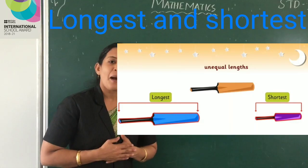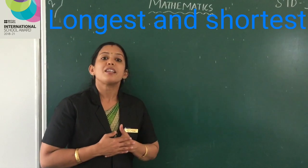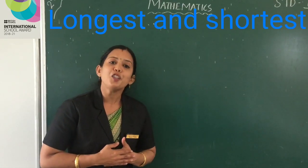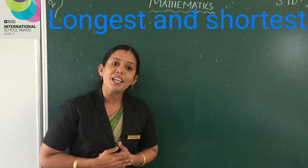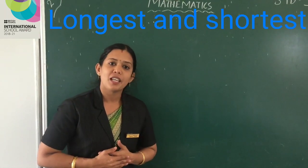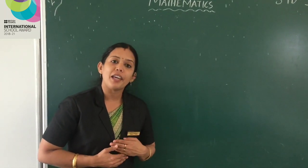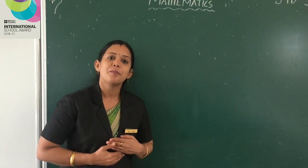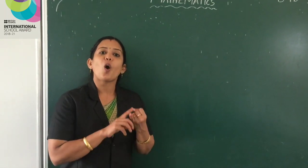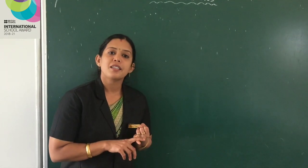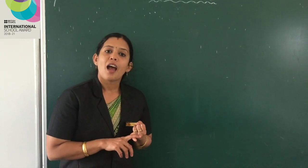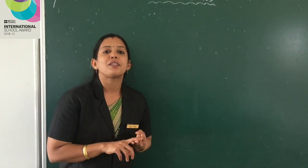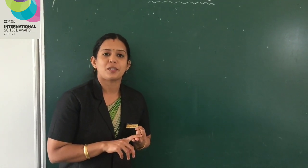When we compare the height of three objects, in that case we use the words tallest and shortest.